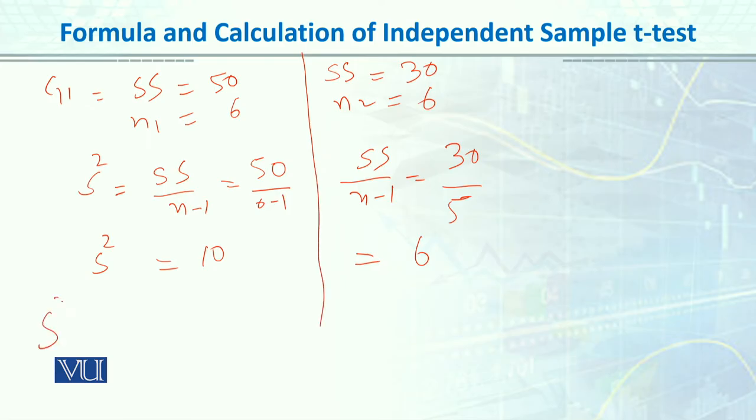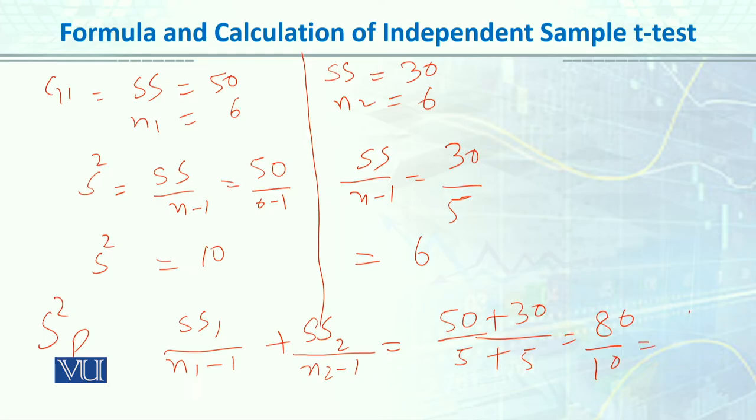For pooled variance, we combine both groups using the formula: SS1 divided by (n1-1) plus SS2 divided by (n2-1). Plugging in values: 50 divided by 5 plus 30 divided by 5 equals 80 divided by 10, which equals 8. Now we can see that group 1 variance is 10, group 2 is 6, but pooled variance lies somewhere in the middle of both. When our sample size is equal in both groups, the pooled variance usually lies in the middle of the two independent group variances.